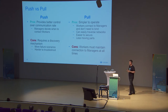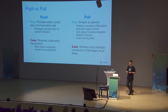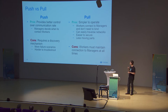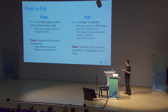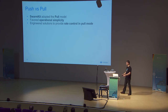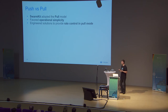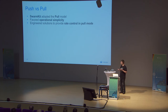The inconvenience of pull is that connection has to be kept alive at all times. For SwarmKit, we decided to go with the pull model — we favored operational simplicity over control rate. But at the same time, we engineered solutions to take back rate control on our side.